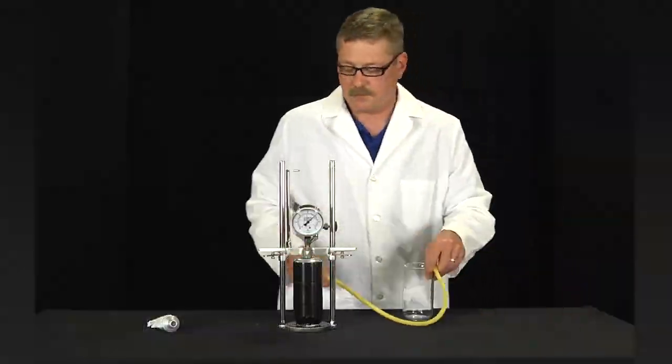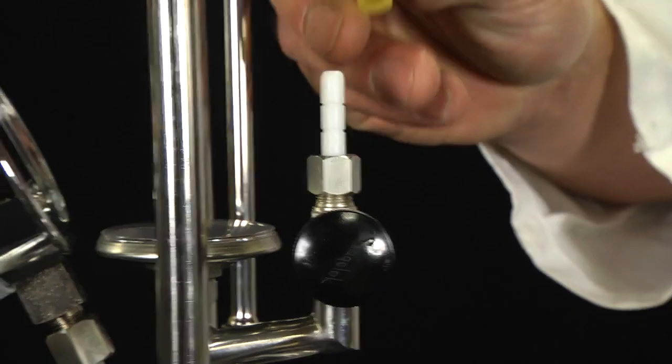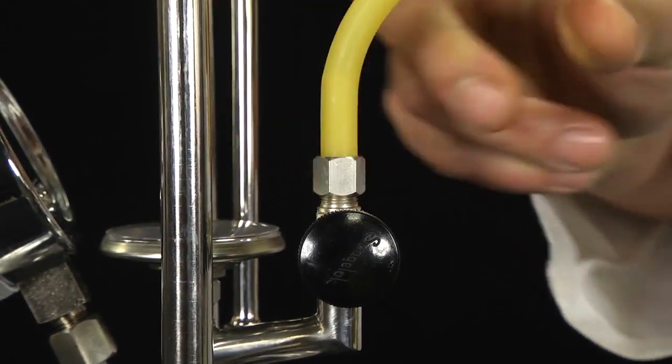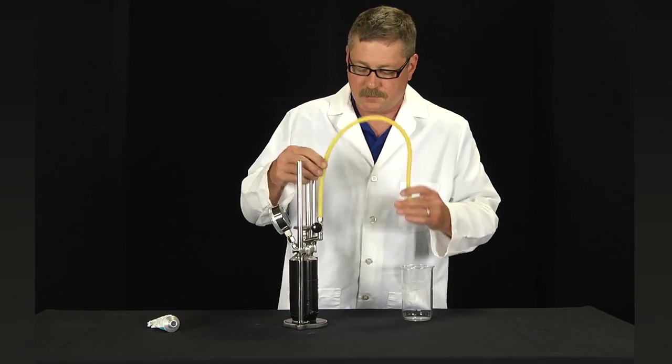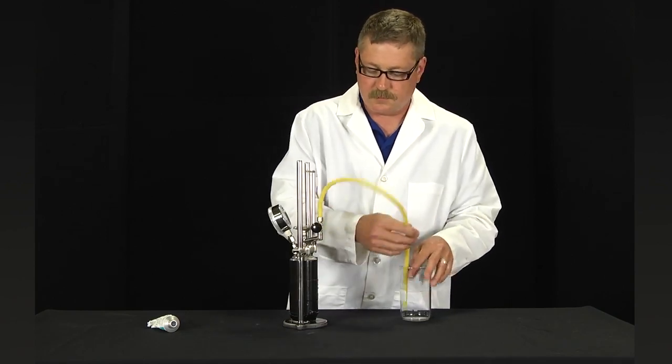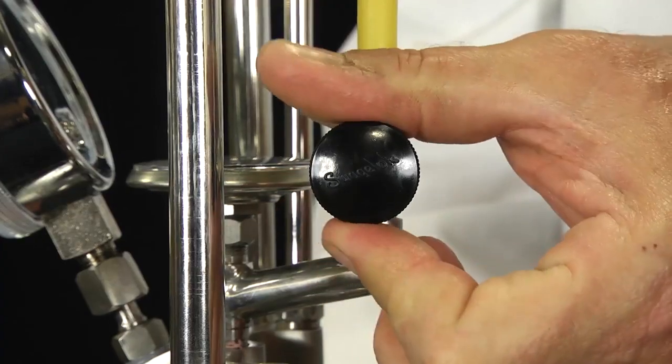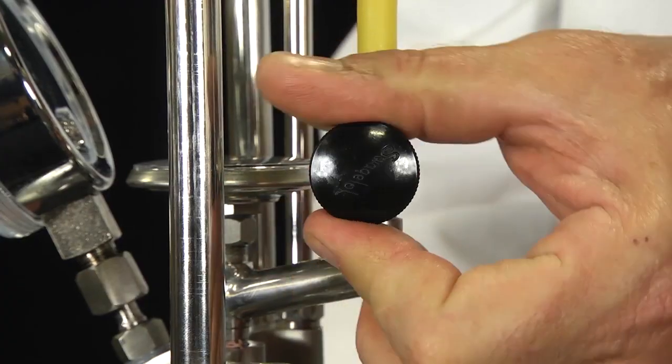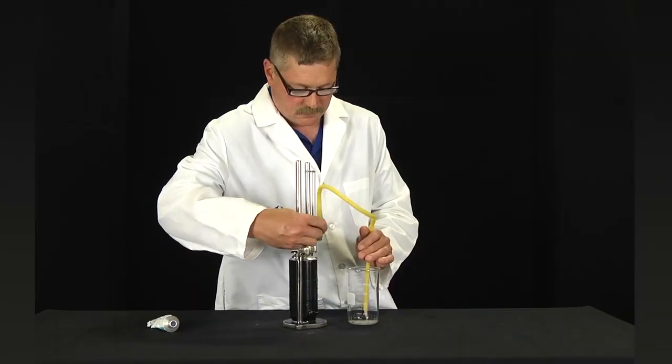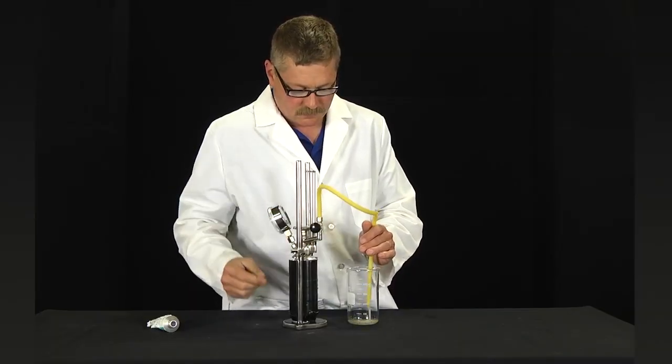After the test has been completed, attach a piece of plastic tubing to the hose nipple of the Whitey valve. Slowly open the Whitey valve to bleed off the pressure in the container and drain into a sink or suitable container.